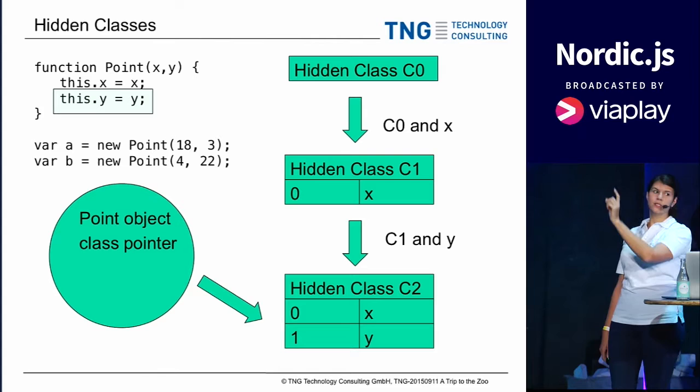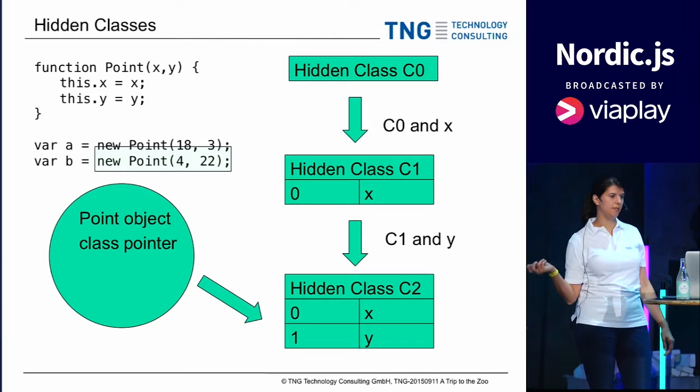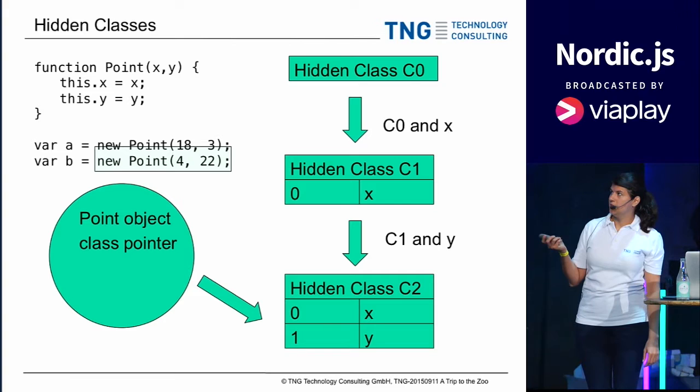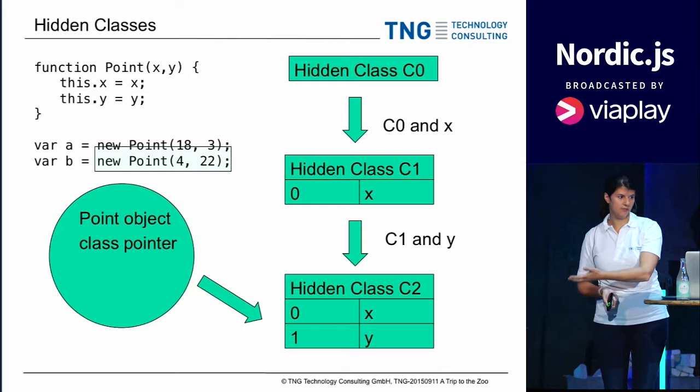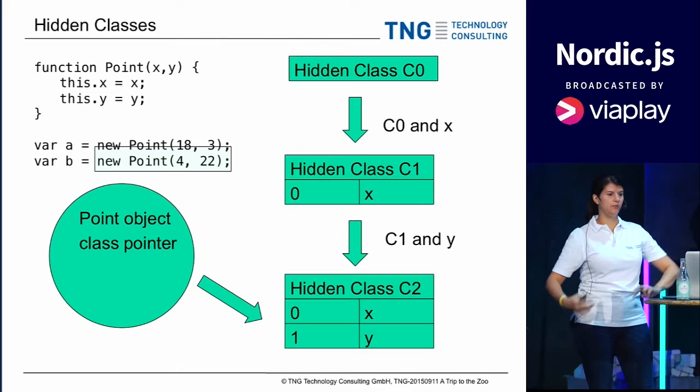If we instantiate another point, the compiler will realize it has the same hidden class as the first point. If I were to add another member variable — say Z — the compiler would assign a hidden class C3, and then A and B would not have the same hidden class anymore. The order is important: if you change the order when you assign member variables, you'll also get different hidden classes.